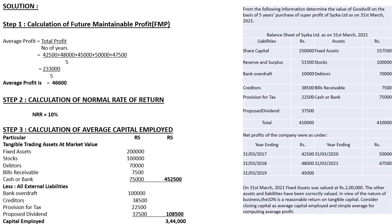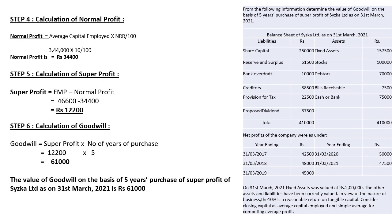Step 4 — calculation of normal profit. Formula: Normal Profit = Average Capital Employed × NRR ÷ 100. So: 3,44,000 × 10 ÷ 100 = 34,400. Normal profit is 34,400.